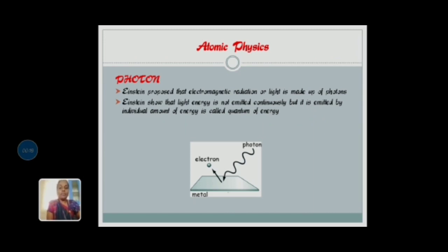Photon. In 1905, Einstein proposed that electromagnetic radiation or light is made up of photons. Thus, the photon is the elementary element of light. Einstein showed that light energy is not emitted continuously, but it is emitted by individual amounts of energy called quantum of energy.